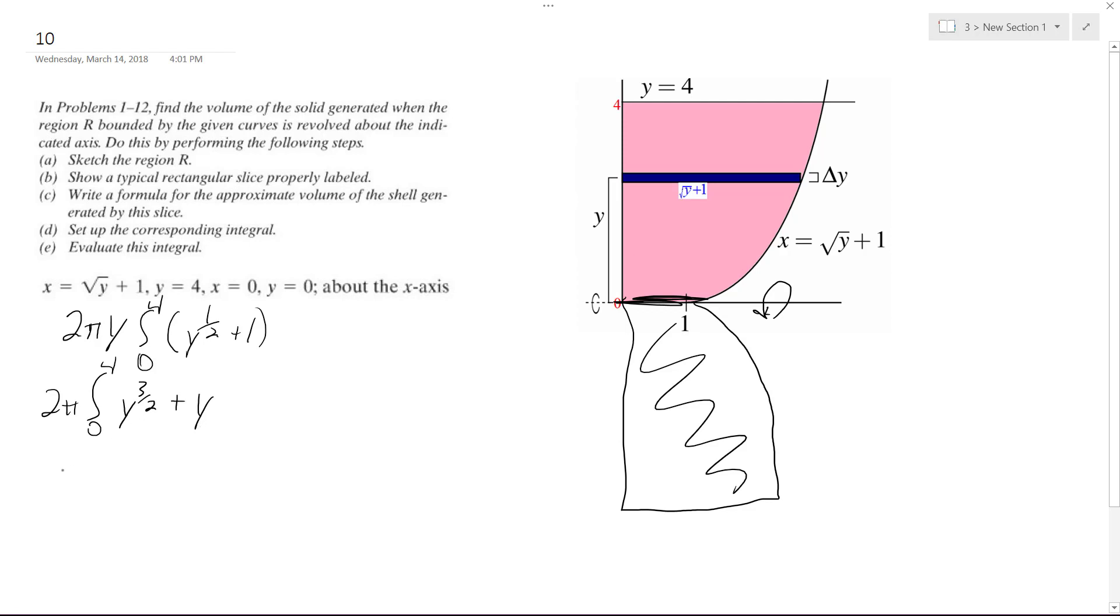All right, so when we integrate this, and then, of course, dy. So we're going to have 2π quantity y raised to the 5 halves over 5 plus y to the 2 over 2, going from 0 to 4.